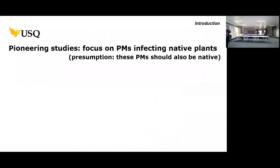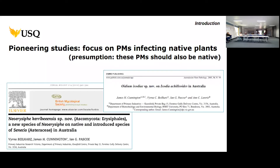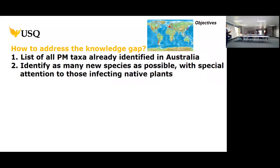Coming back to powdery mildew and those first studies from the 1990s and early 2000s: these focused on powdery mildew infections of native Australian plants, with the presumption that whatever infects a native Australian plant should be a native powdery mildew species. A number of species on native Australian plants were described as native. However, the knowledge gap remained, so I started a project in 2017 to produce a comprehensive list of what has been reliably identified in Australia and to identify as many new powdery mildew species on both native and introduced plants as possible.